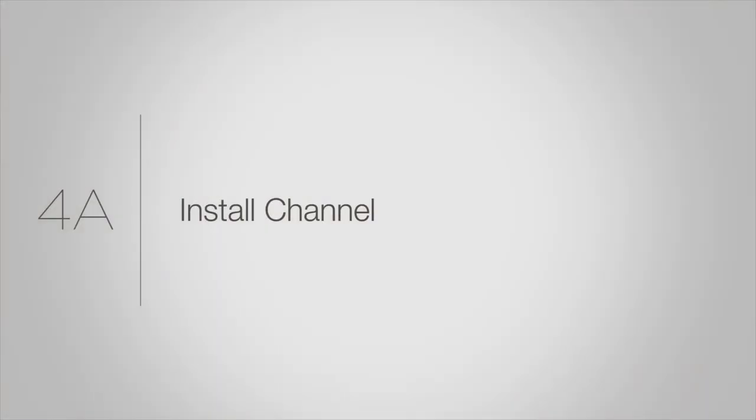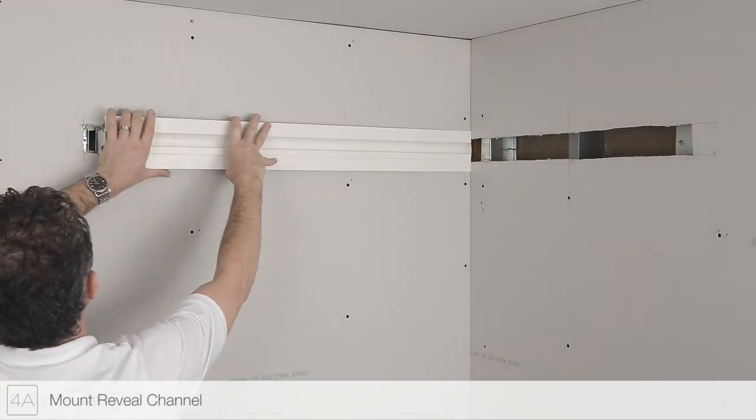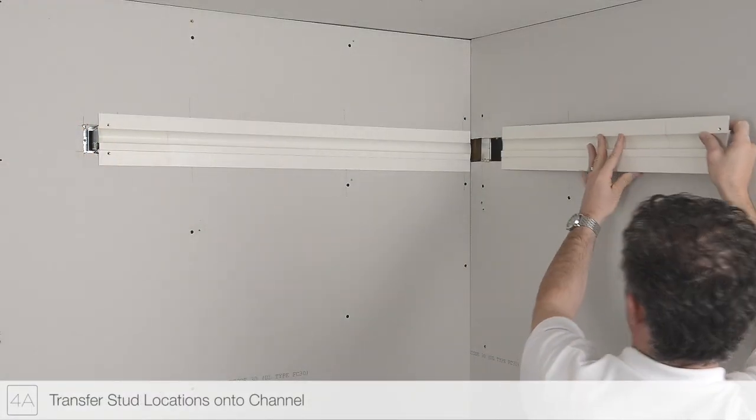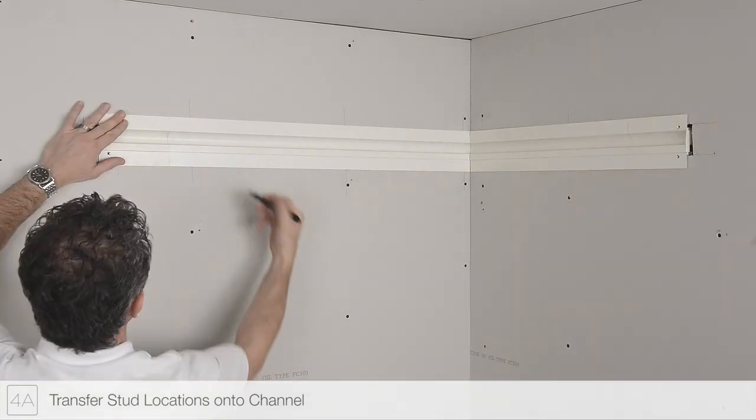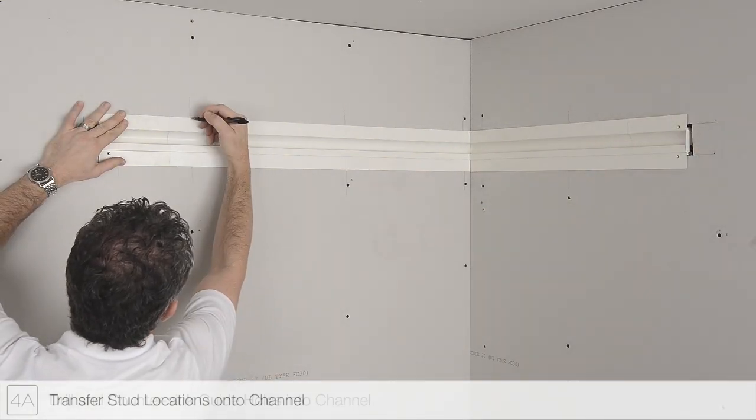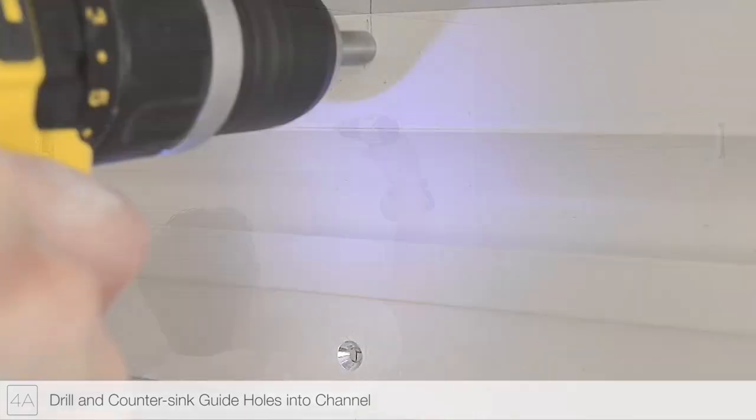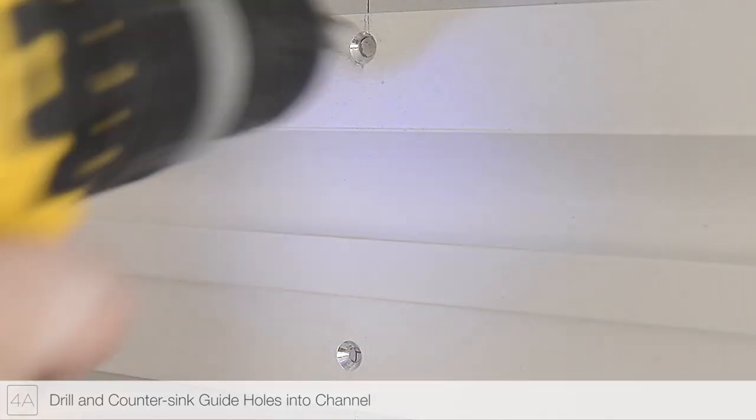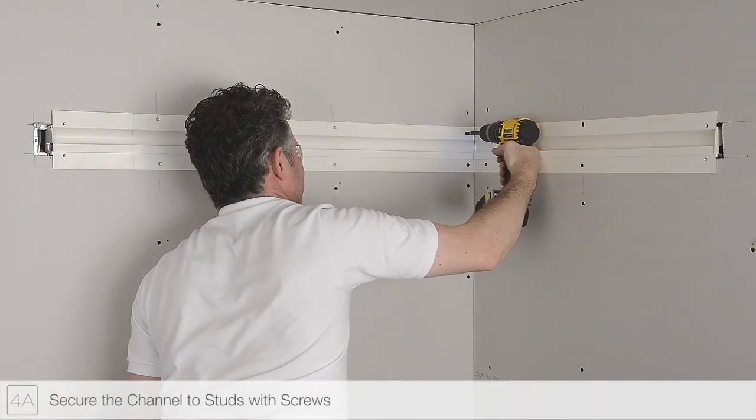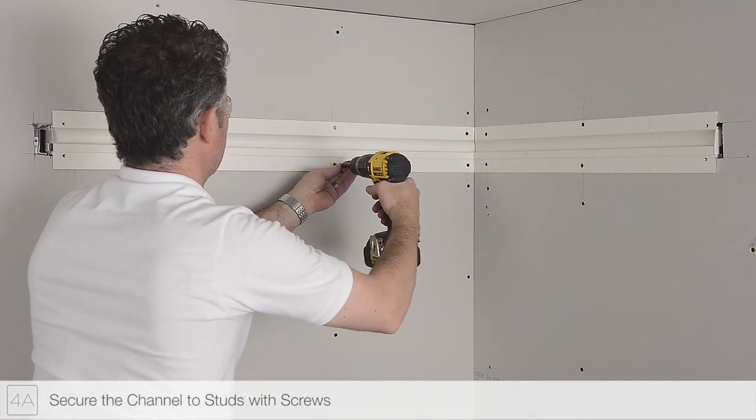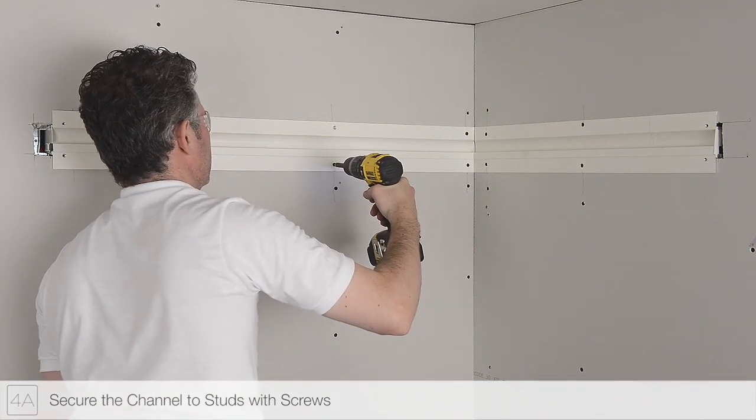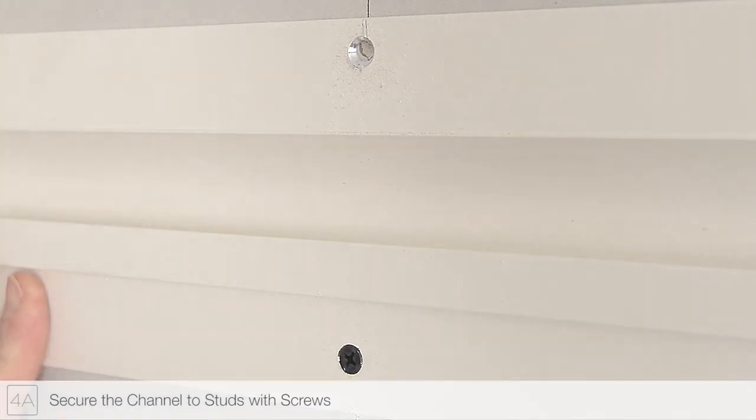Step 4A: Position the channels of reveal into the drywall cutout. Transfer the stud location markings on the channel. Drill and countersink guide holes using the countersink bit provided. Secure the channel to the drywall studs using screws. Ensure all screw heads sit flush.